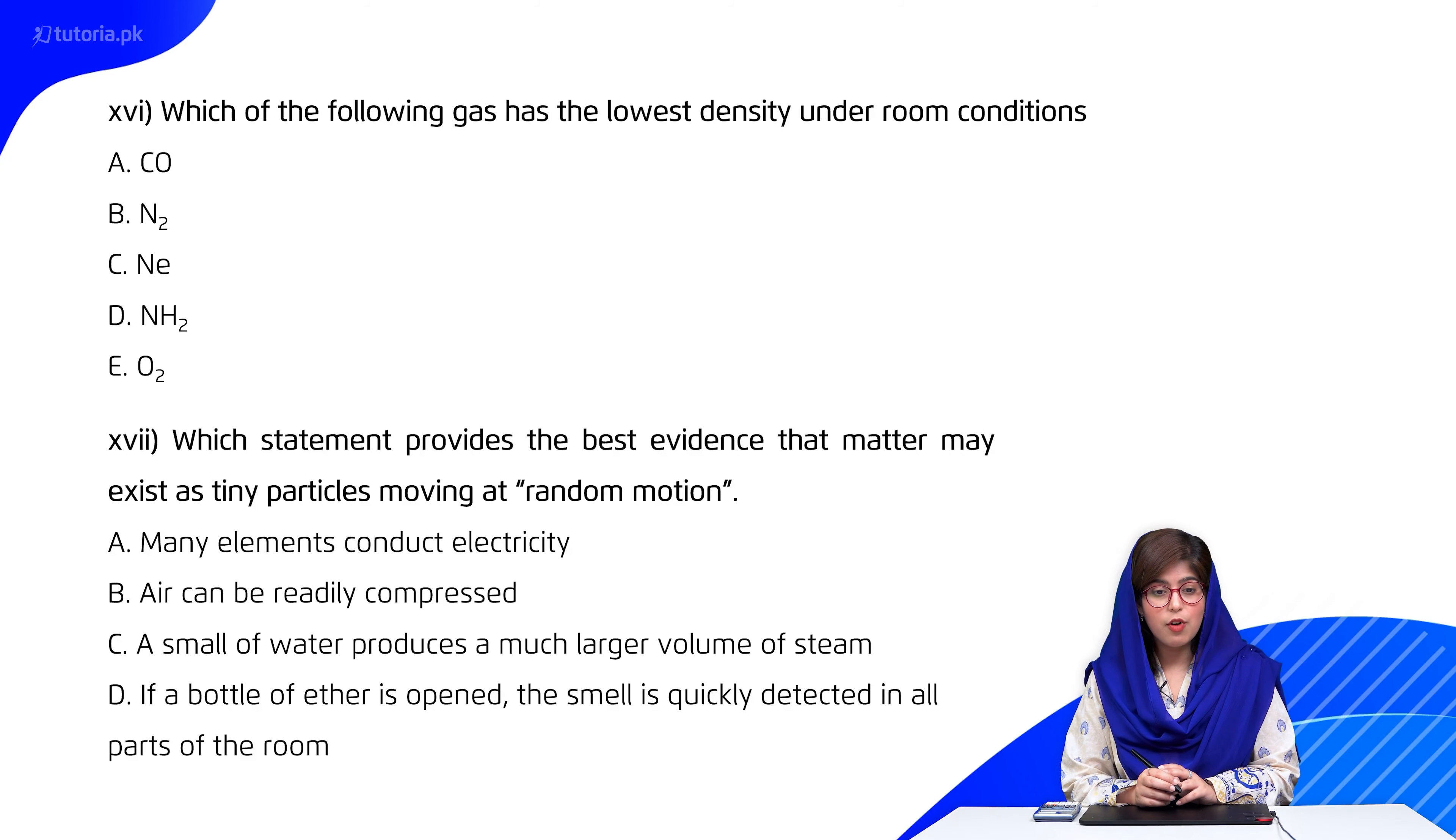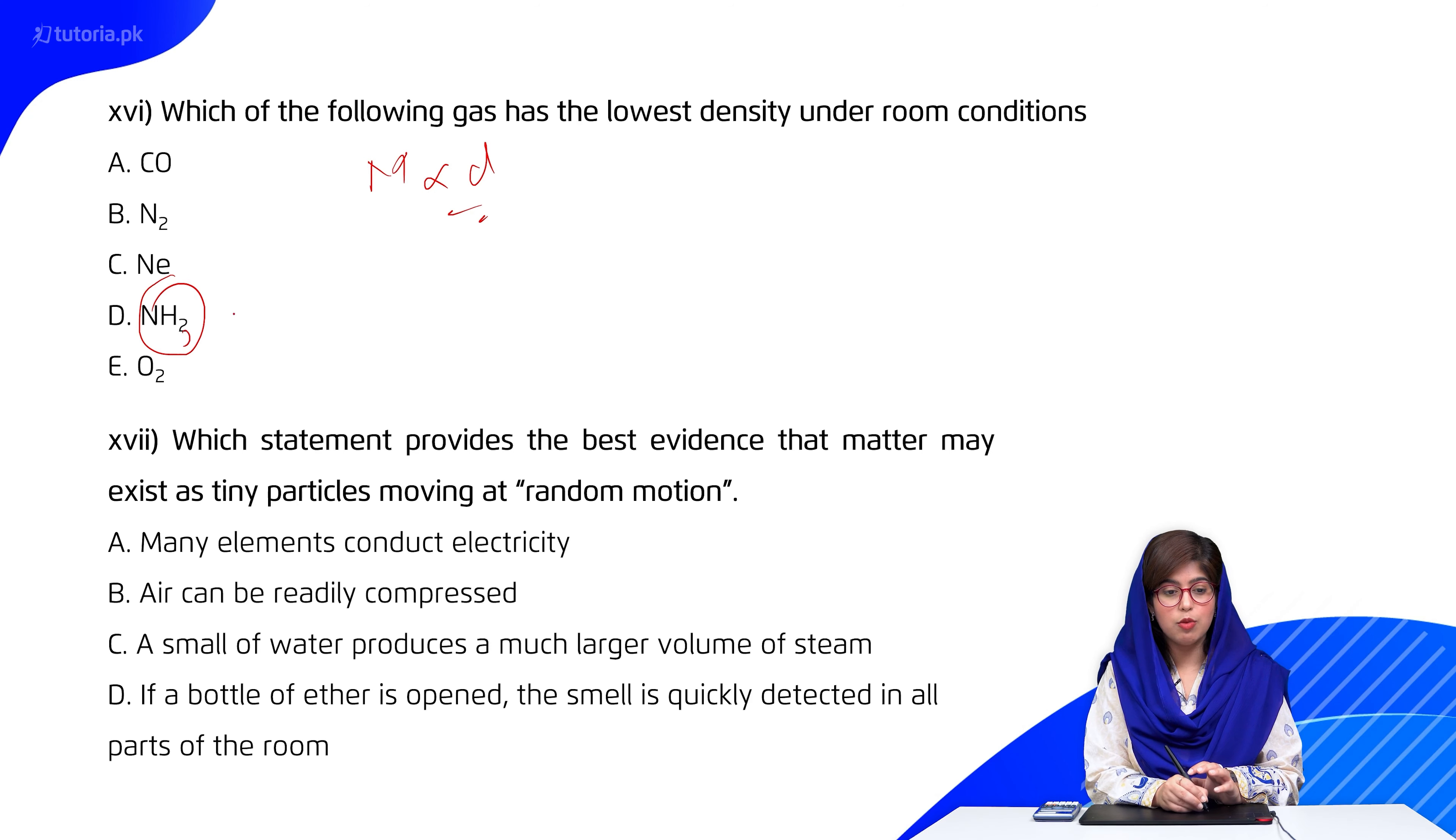Then students, next, which of the following gas has the lowest density at room condition? So students, remember that which molecular mass will decrease, its density will decrease because it has a direct relation. So if you see here students, if we compare mass, ammonia has the smallest mass, that is 17 gram per mole. It would be the right one.